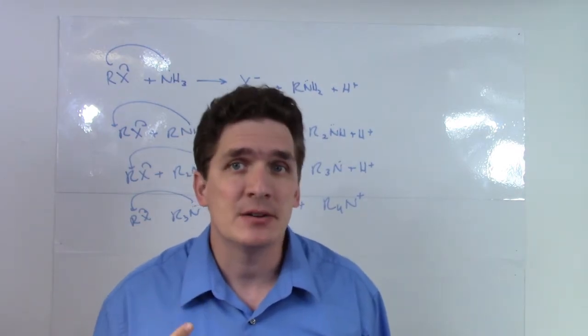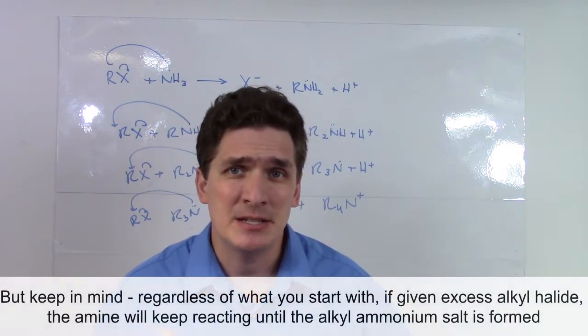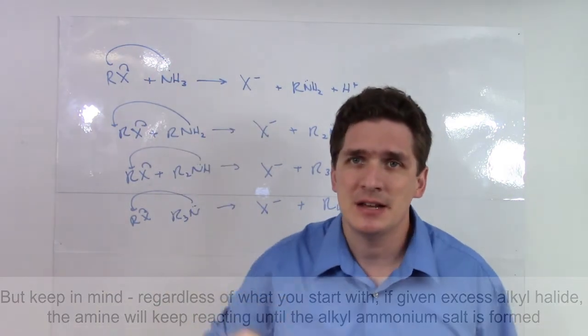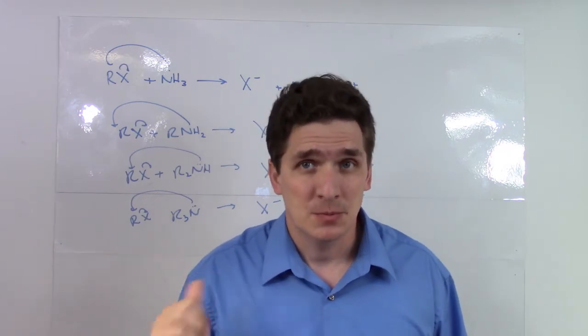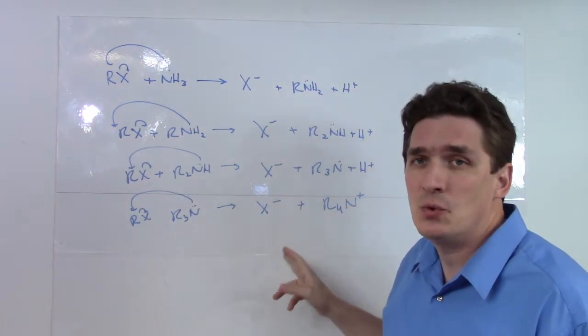Now this may not necessarily be a bad thing if you want to produce the alkyl ammonium—it's very doable to do. But if you're looking just to basically do a single replacement, thinking, well, there's a lone pair, I've got a Lewis base, it'll pick off the X, I'll produce the primary amine—you'll produce the primary and the secondary and the tertiary and the quaternary.